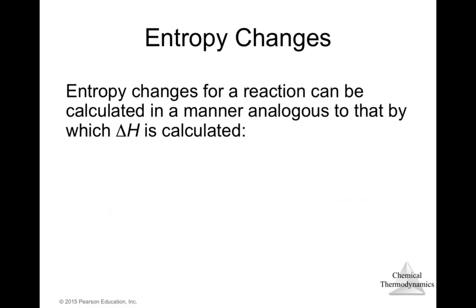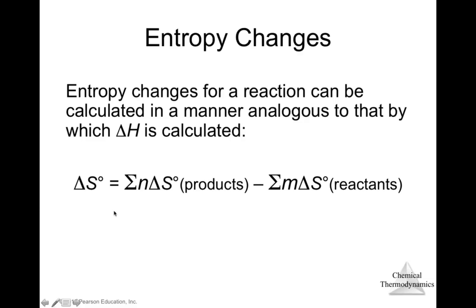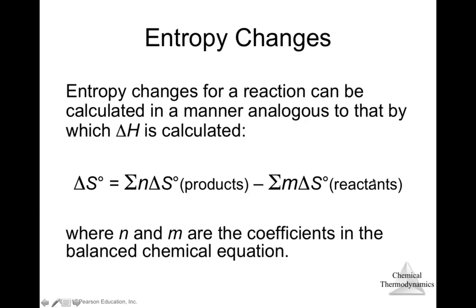Entropy changes for a reaction can be calculated analogously to enthalpy changes. The standard ΔS° equals the sum of n times the standard molar entropy of the products minus the sum of m times the standard molar entropy of the reactants, where n and m are stoichiometric coefficients in the balanced chemical equation. We multiply each entropy value by its coefficient, sum products, sum reactants, then subtract.